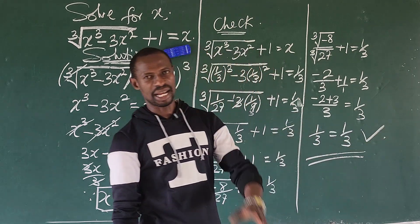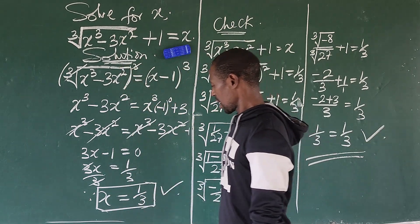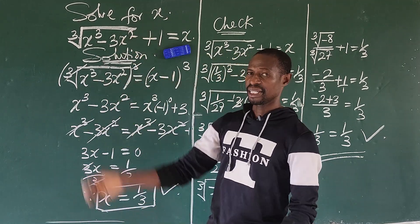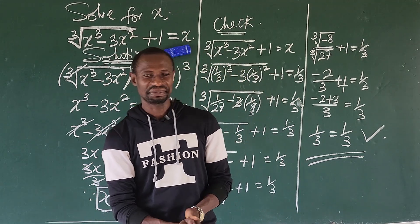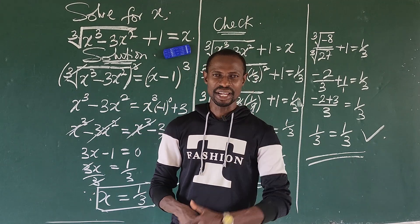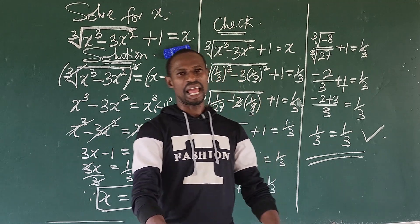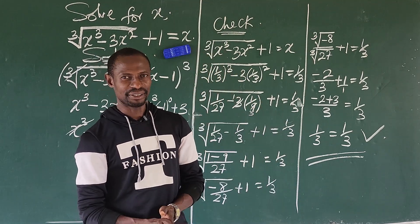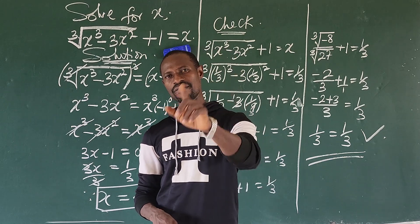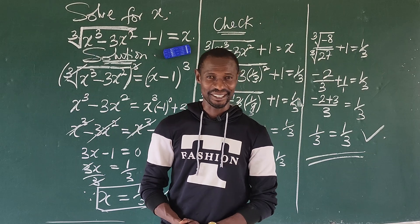This shows that our answer, x equals 1 over 3, satisfies the original radical equation. If you learned something from this challenge, give the video a thumbs up. If you haven't subscribed, please subscribe — we release videos all the time for your learning. Thanks for being here, and see you in our next class. Bye for now!